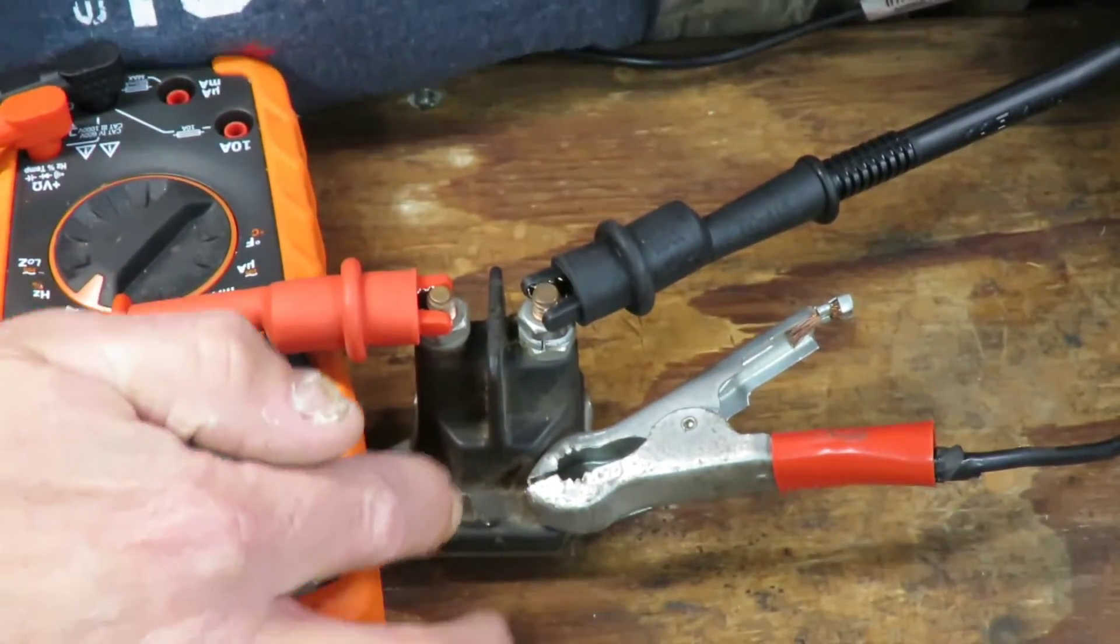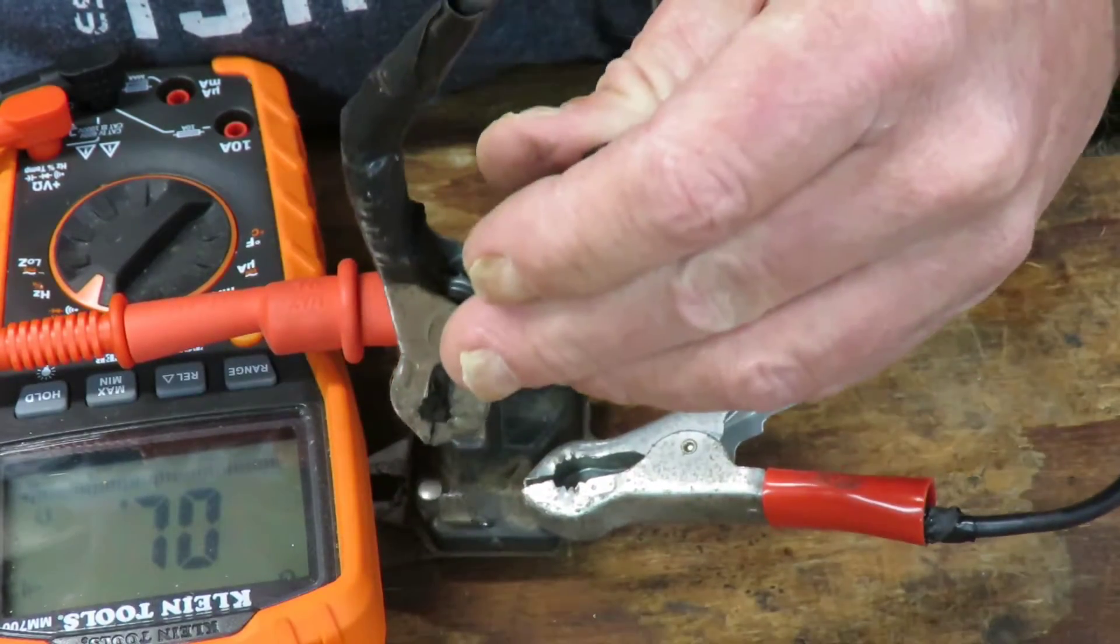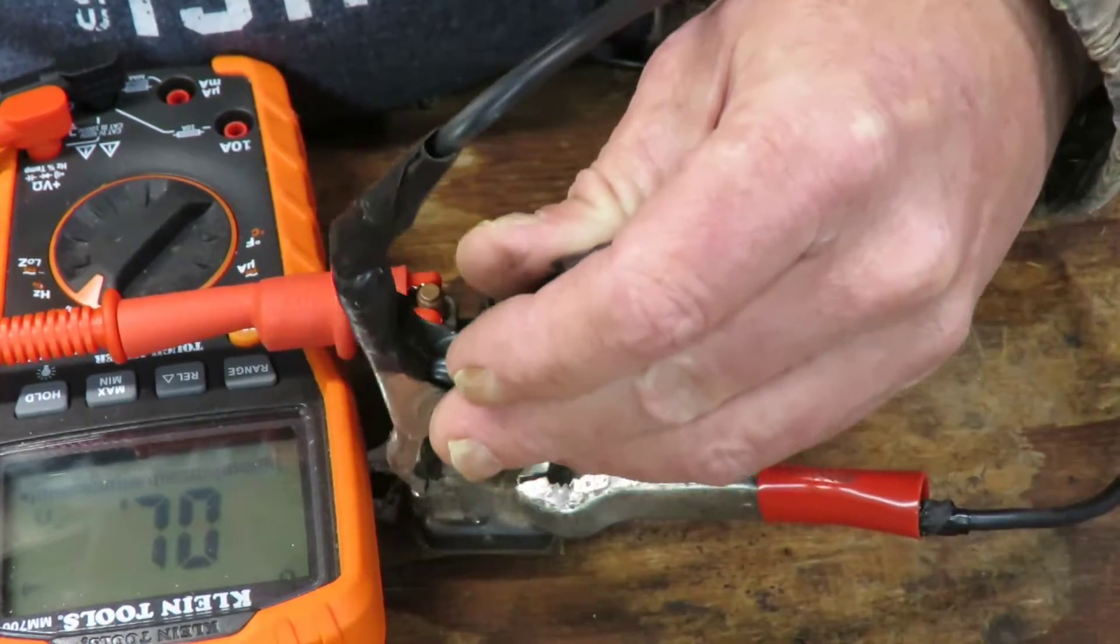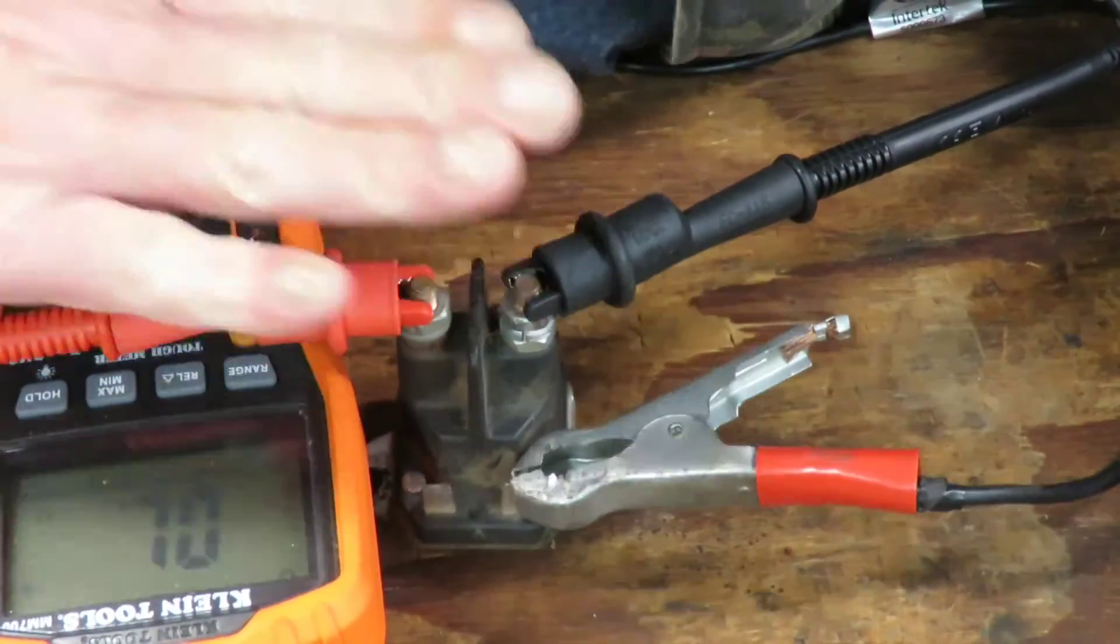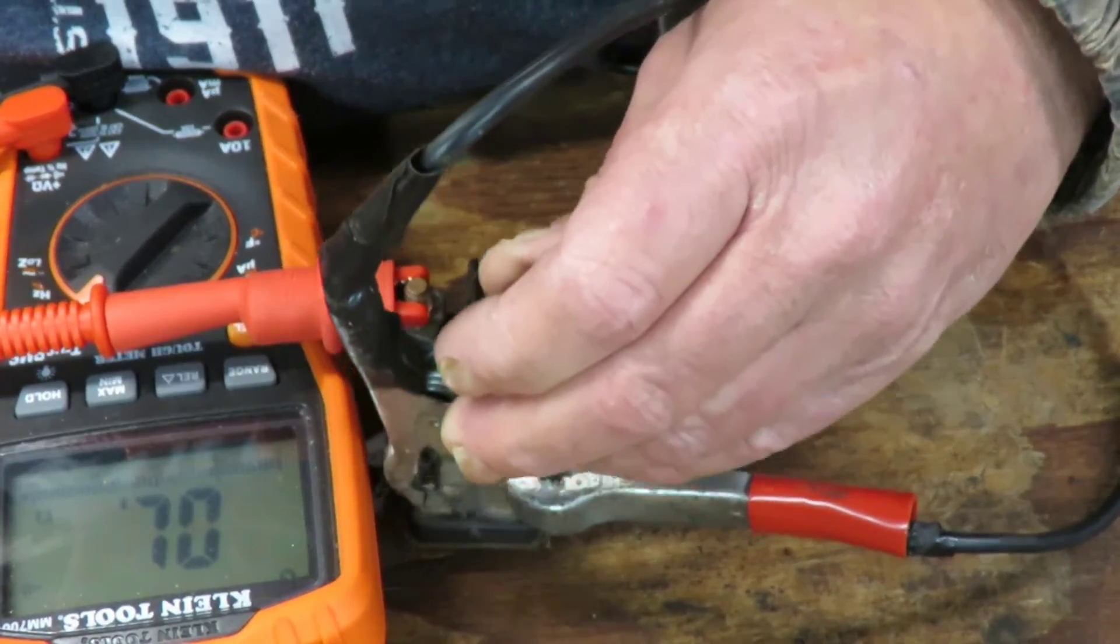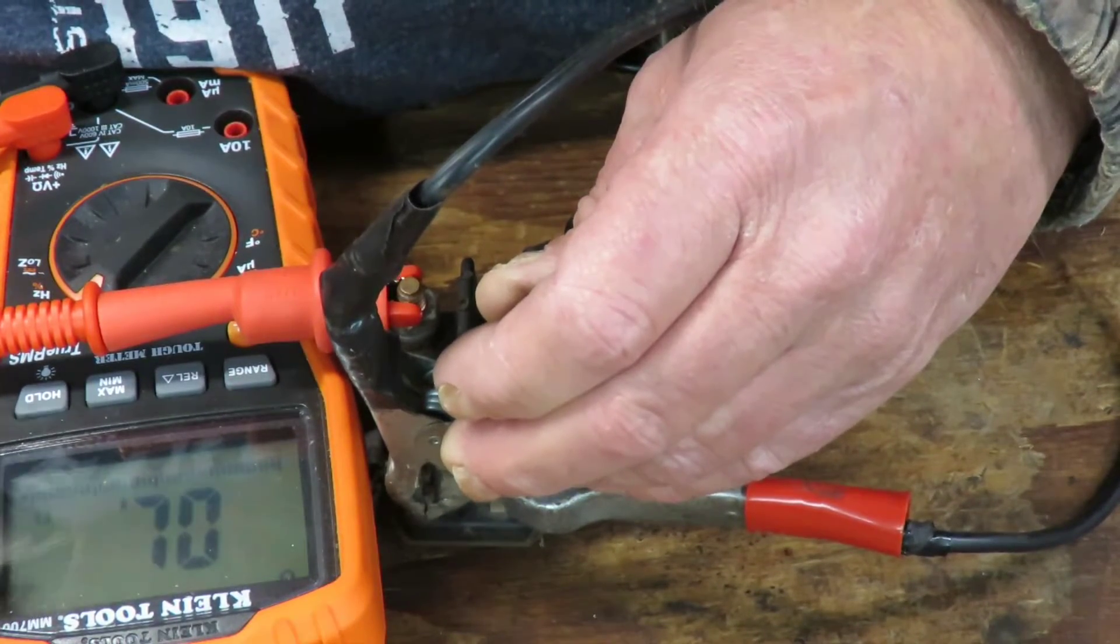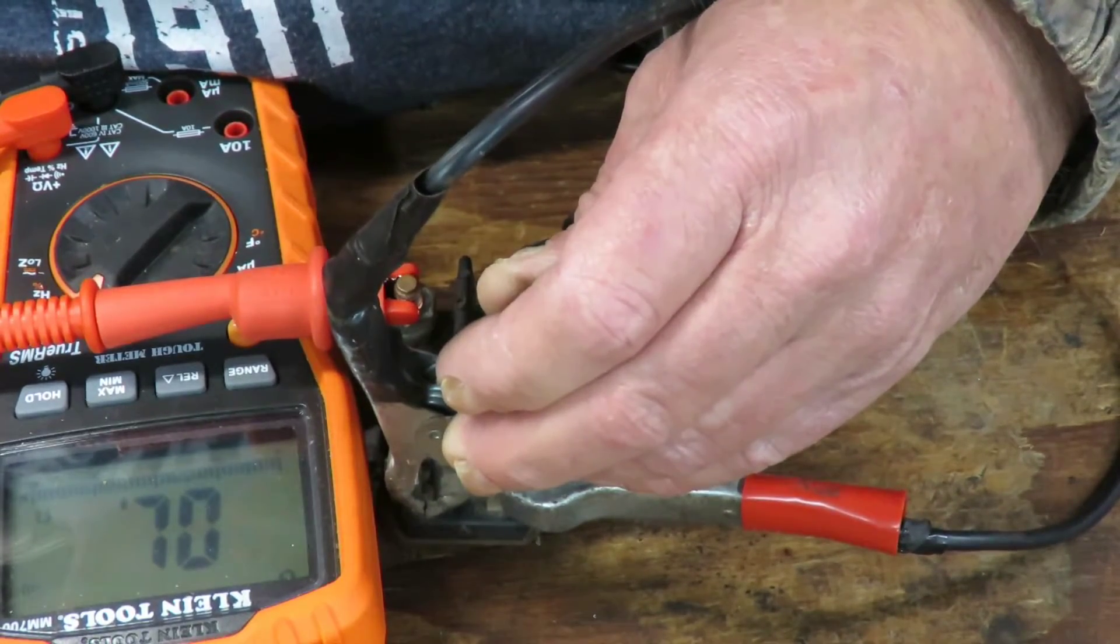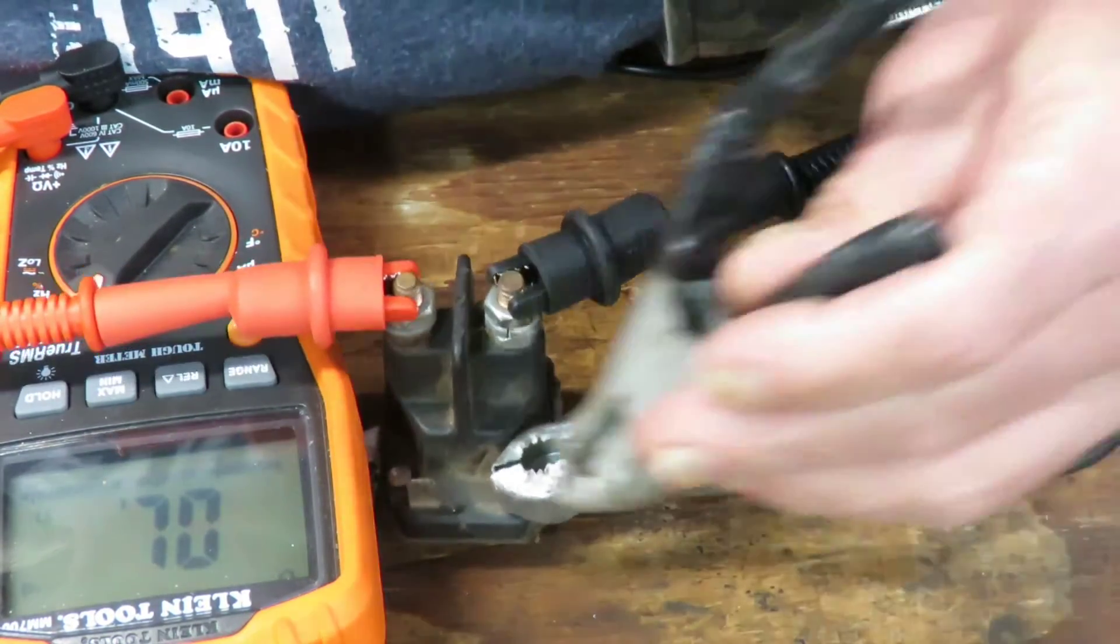Even if it beeps, you want to do that several times. Just hit it, hit it, just to make sure if yours is working that it engages that meter every single time. If you touch it and it beeps and then you touch it again and it don't beep, touch it again and it beeps, touch it again and it beeps, you need to buy a solenoid because it should connect every time.